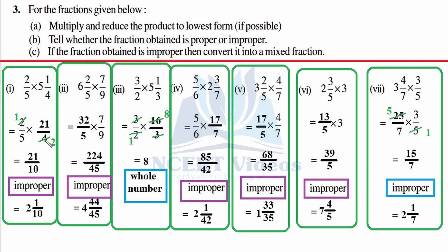Cancellation opportunity: we cancel to get 21 over 10. It is improper because numerator is greater than denominator, so we convert: 2 and 1 over 10 — ten twos are 20, remainder 1 over 10. This is how you'll do the rest of the questions.